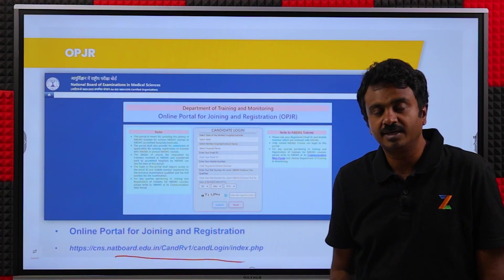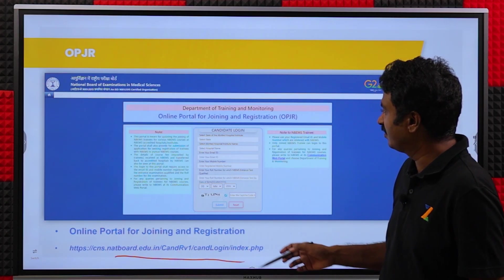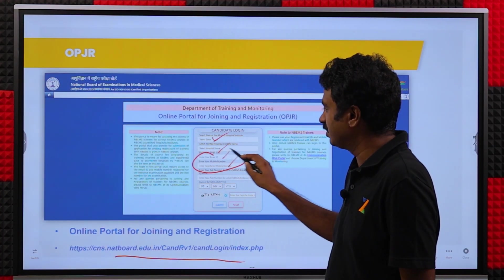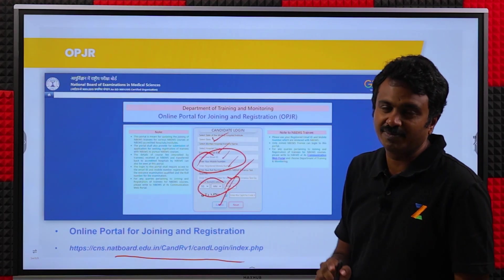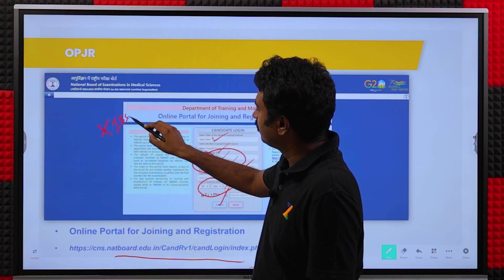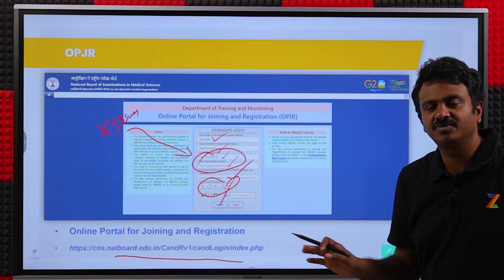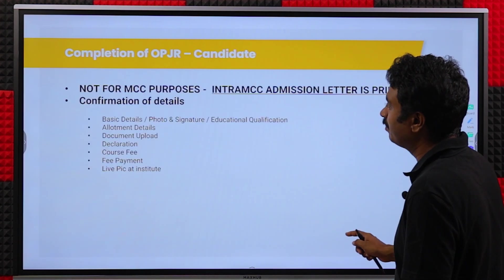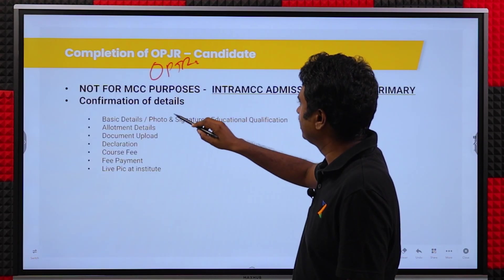This is the portal. The link for the portal is mentioned on screen and will also be in your allotment letter. Enter your state, hospital name, email ID, registered mobile number, roll number, and date of birth. Once you submit, it will take you to the next page. Last time in Round 2 there were huge issues — many were not able to log in, OPJR did not work. If it doesn't work, don't worry about it. The only thing you need to do is complete the processes in OPJR.